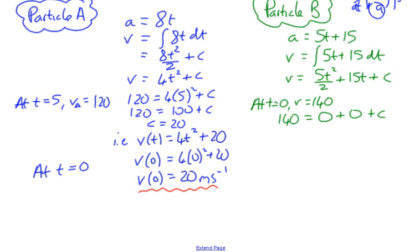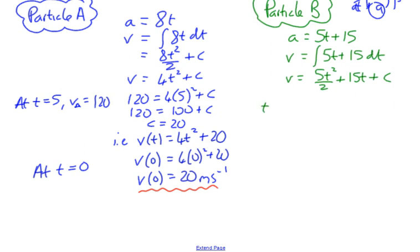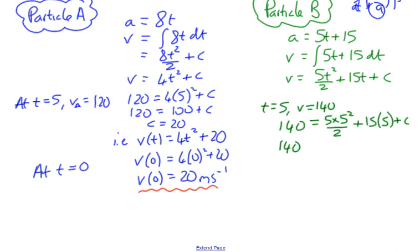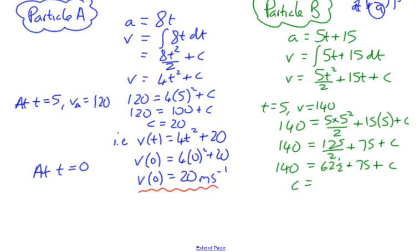It's not t equals zero — it's t equals five, v equals 140. So we substitute in: 140 equals 5 times 5 squared over 2, plus 15 times 5, plus c. Working that out: 125 over 2 is 62.5, plus 75 is 137.5, which means c equals 2.5, or 5 over 2.